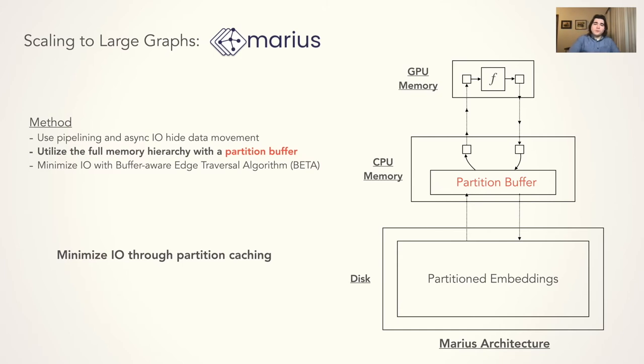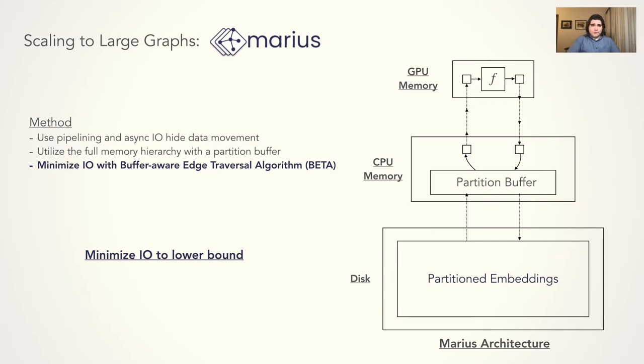Our partition buffer, which resides in CPU memory, caches partitions which are swapped in from disk. This caching mechanism allows us to reduce disk I/O during training. To improve the ability of this partition buffer to cache partitions, we introduced the novel BETA ordering. This allows us to iterate over the partitions during training in an order which minimizes the amount of swaps to this buffer and therefore minimizes the amount of I/O. It actually does this close to the lower bound. Next, we discuss the BETA ordering in detail.